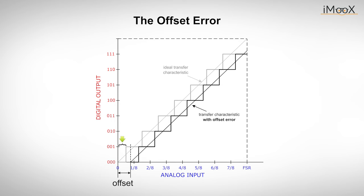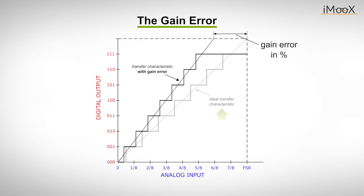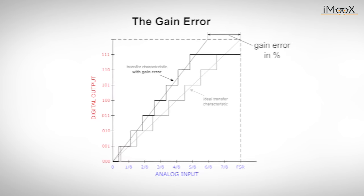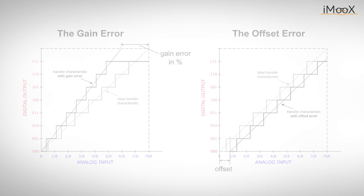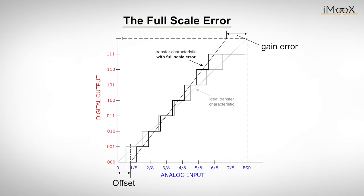Another common error is the so-called gain error. Ideally, our transfer curve has a slope of 45 degrees. If a gain error occurs, the slope changes. The gain error is defined as the difference between the real and the ideal analog input value which causes the last change in the digital output code. In order to compensate for the gain error, any offset error must be adjusted beforehand. Data sheets often also mention the full-scale error, which simply equals the sum of the offset error and the gain error, as shown in the figure.